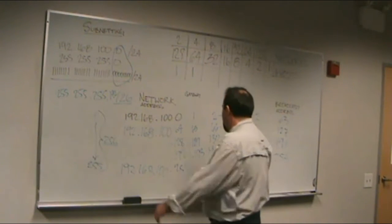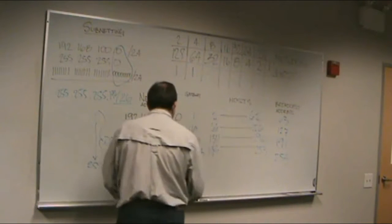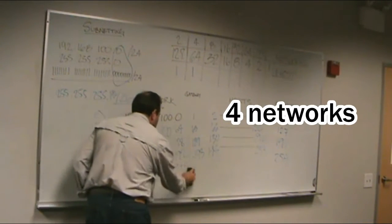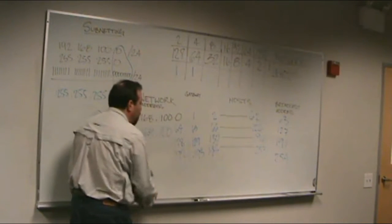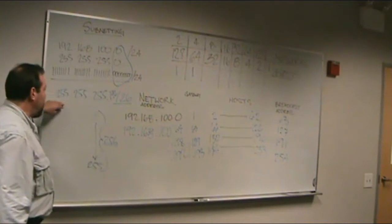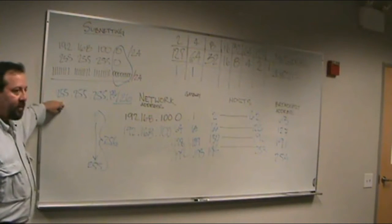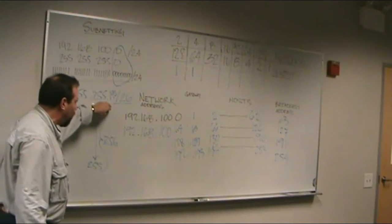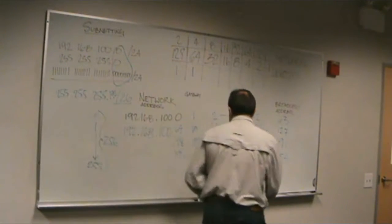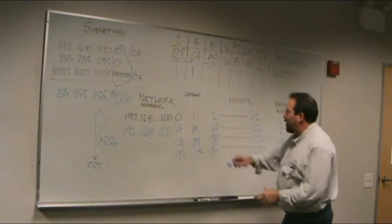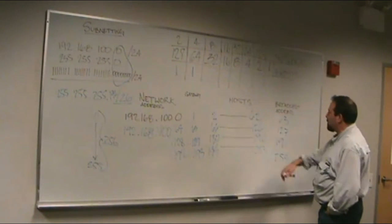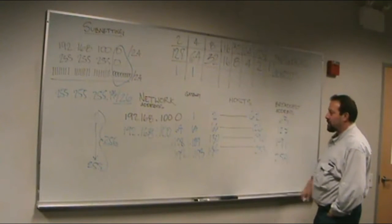We now have created four networks with the same subnet mask of 255.255.255.192. We have the network address, the gateway, addresses we can use for hosts, and the broadcast address.